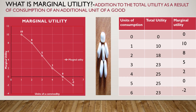The next concept is Marginal Utility. Marginal utility is the addition to total utility as a result of consumption of an additional unit of a good. Here we have the marginal utility schedule. Marginal utility is related to total utility — let me show you how.